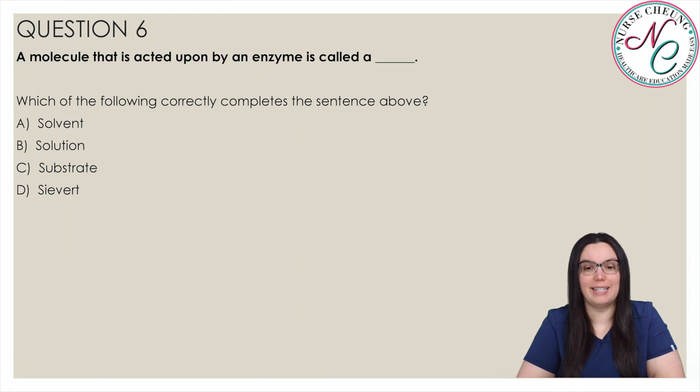A molecule that is acted upon by an enzyme is called a blank. Which of the following correctly completes the sentence above? Is it A solvent, B solution, C substrate, or D sievert? And the correct answer is C substrate. Enzymes are proteins that act as catalysts. They speed up chemical processes. Without them, these reactions would take longer. Enzymes act upon a molecule known as a substrate.